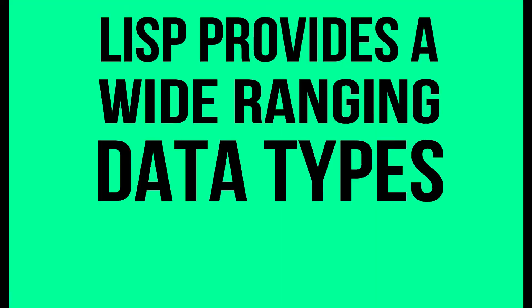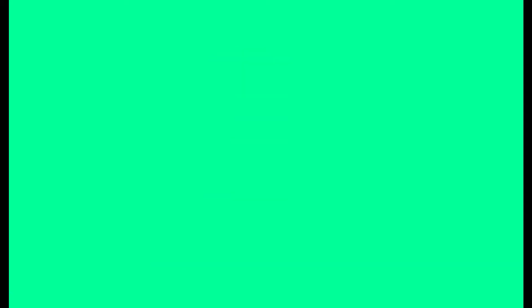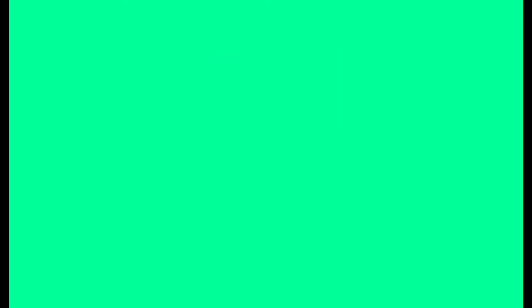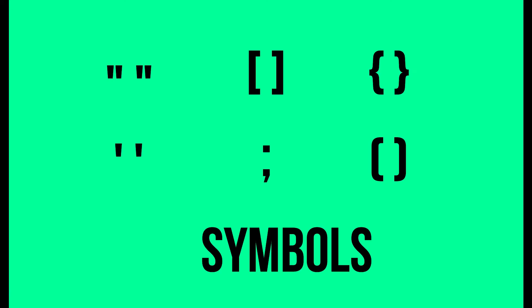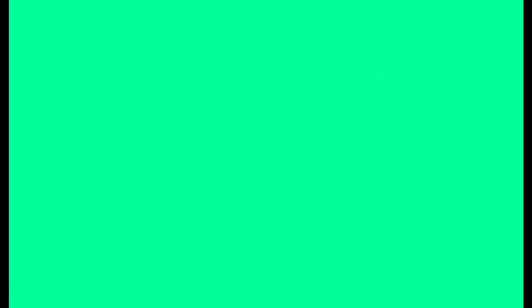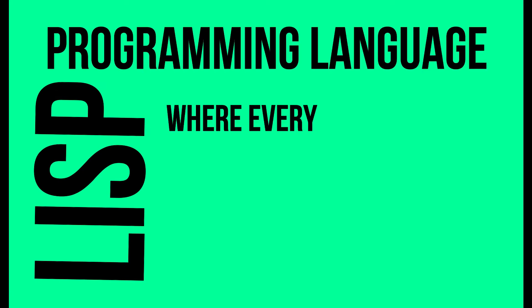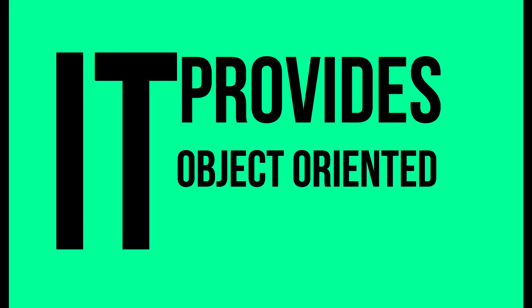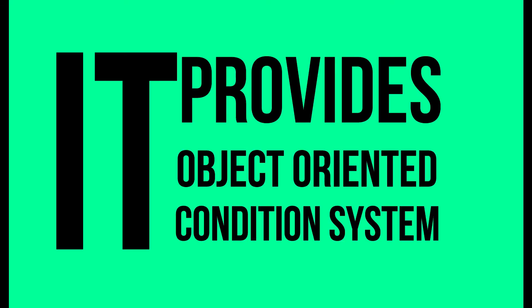Lisp provides wide-ranging data types like objects, structures, lists, vectors, adjustable arrays, hash tables, and symbols. Lisp is expression-based programming — a programming language where every construction is an expression and thus yields a value. It also provides an object-oriented condition system.